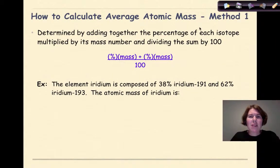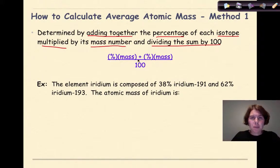How to calculate average atomic mass? Method 1. The first method that we're going to look at is determined by adding together the percentage of each isotope, multiplying it then by its mass number, and dividing the sum by 100. So let's look at an example. The element iridium is composed of 38% iridium-191 and 62% iridium-193. The atomic mass of iridium is, so the way that we would set this up is that I would take my percentage, the first percentage listed, which is 38, and I'd multiply it by its mass number, so 191.